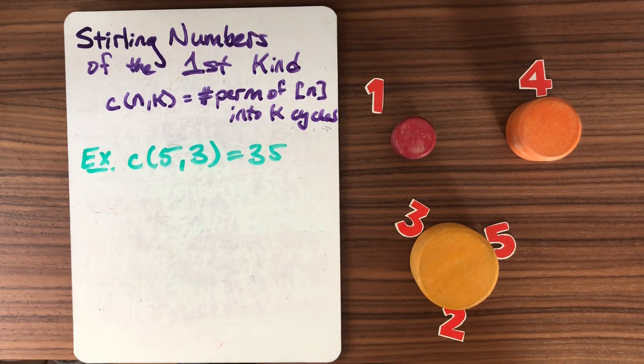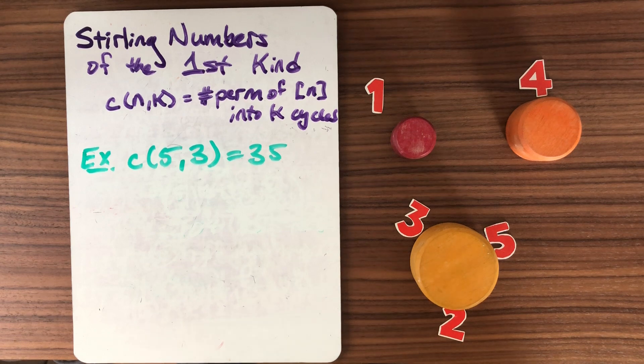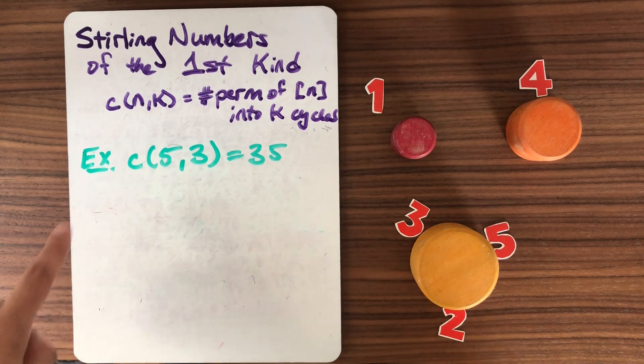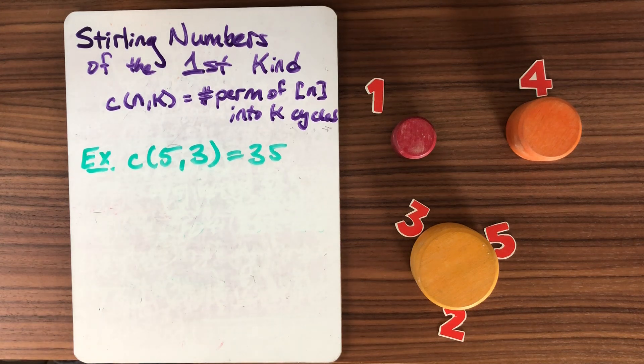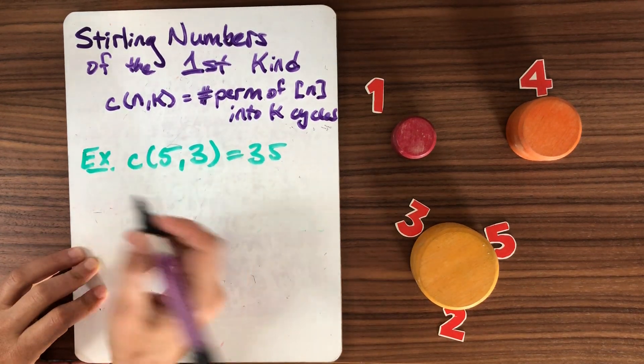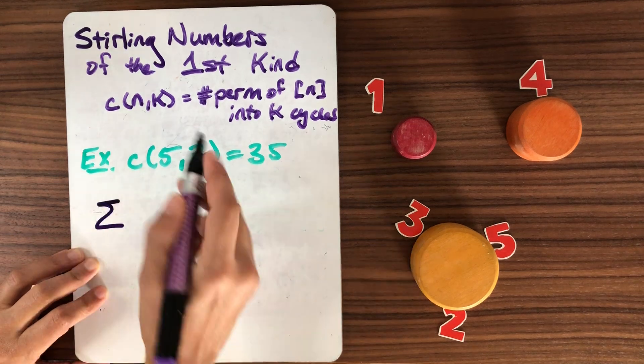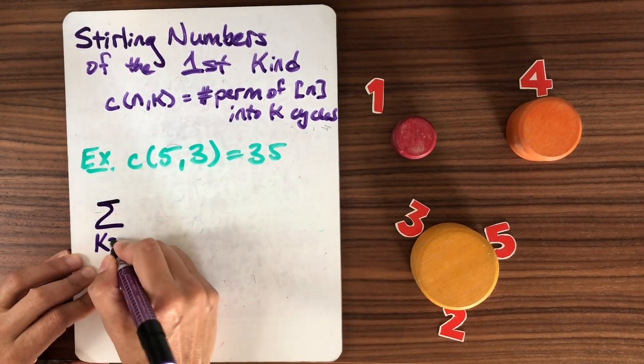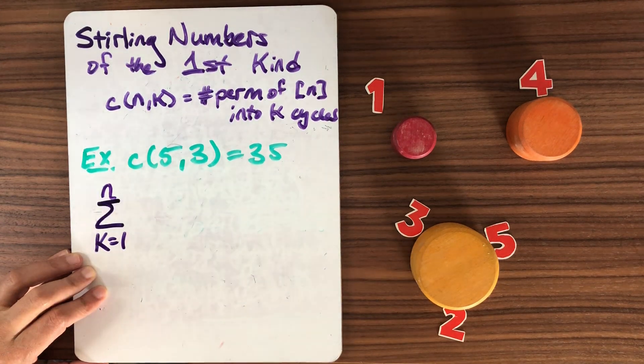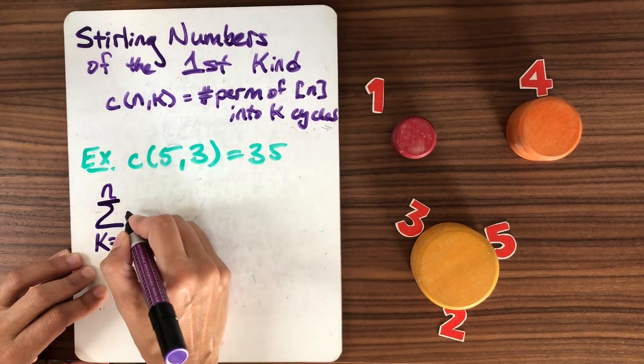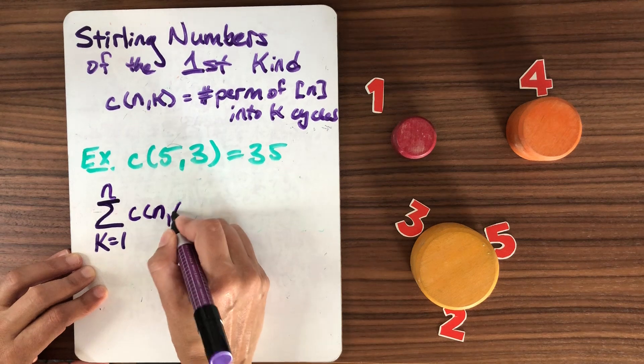So another thing that we could do, instead of just counting the Stirling numbers in this way, and we know that these guys are rather difficult to get a handle on, what happens if we just add them up? So for all k. We have k equals 1, because that's the fewest number of cycles that you could have. The most number of cycles you could have is n.